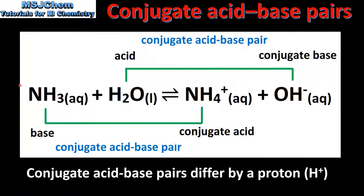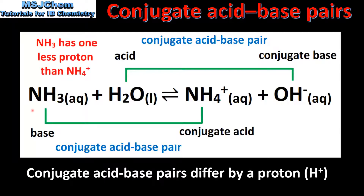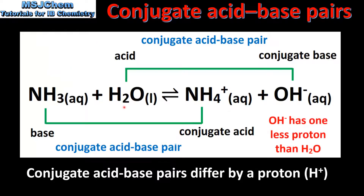Next we look at the reaction between ammonia and water. In the forward reaction the ammonia is the base and its conjugate acid is the ammonium ion. These two species are a conjugate acid-base pair as they differ by a proton. The acid in the forward reaction is a water molecule and its conjugate base is the hydroxide ion. These two species differ by a proton, therefore they are a conjugate acid-base pair.